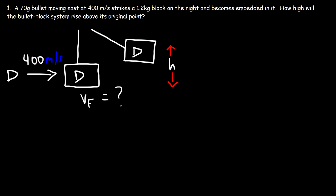After the collision, as the bullet-block system rises, kinetic energy will be converted to potential energy. This is a two-part process: first we use conservation of momentum to find the final speed of the bullet-block system after the collision, then use conservation of energy to find the height. The initial momentum of the system equals the final momentum during any collision if we have an isolated system with no external forces.